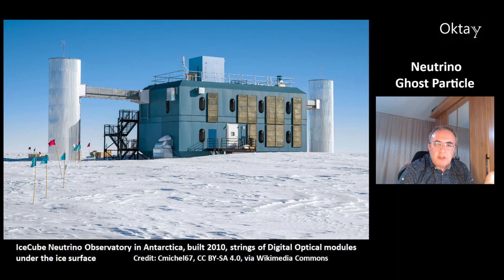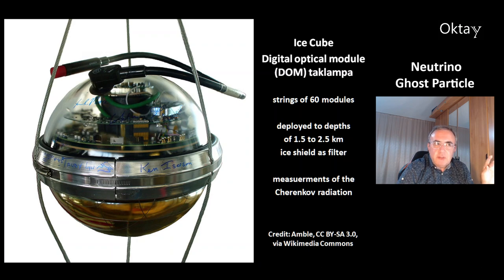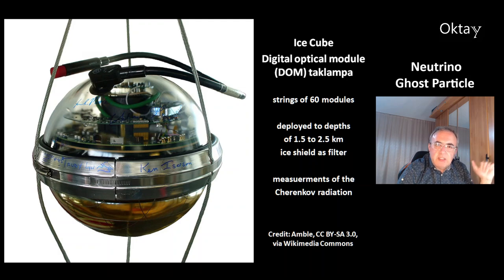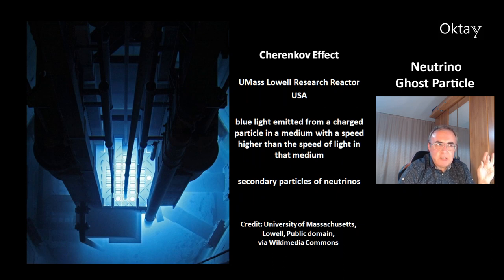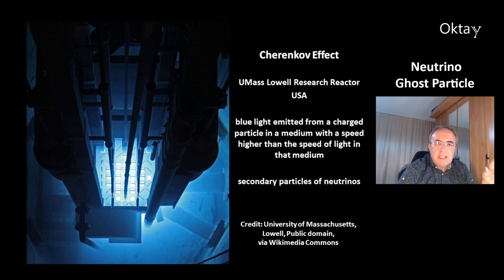This is a nice picture of the IceCube Neutrino Observatory in Antarctica. It was built in 2010 and has strings of digital optical modules under the ice surface. This is a picture of the IceCube digital optical modules, also called DOMs. There are strings of 60 modules deployed to depths of one and a half to two and a half kilometers. The ice shield is a nice filter for other particles. These optical modules detect and make measurements of the Cherenkov radiation. This is blue light emitted by a charged particle in a medium at a speed higher than the speed of light in that medium — and this is light from the secondary particles of the neutrinos.